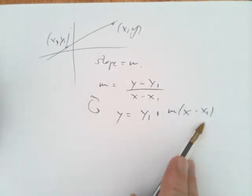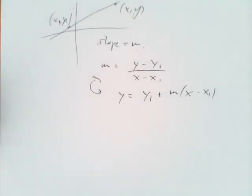You get an equation for the line based on that information. It gives us a way to find the equation of the line given the slope and one point on the line.